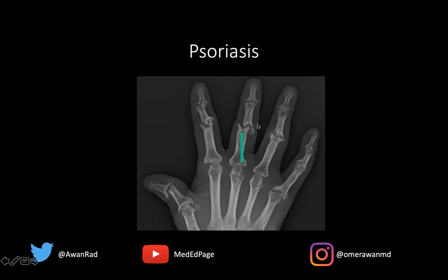We have central erosions in a lot of the PIP joints, and also in the DIP joints. The fact that we have distal distribution would rule out rheumatoid arthritis — RA only very rarely involves the DIP joints. Pyrophosphate arthropathy is not really an inflammatory arthropathy; although you can have erosions, the findings are typically more degenerative at the radiocarpal joint at the wrist and may or may not be associated with chondrocalcinosis.